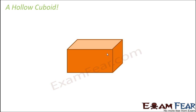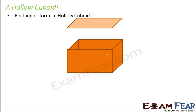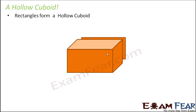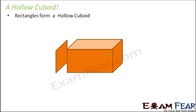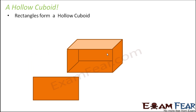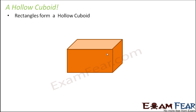You can even make a hollow cuboid using rectangles. How do rectangles form a hollow cuboid? This is how a cuboid looks like — a matchbox. This is one face which is a rectangle, the bottom face is again a rectangle, the back face is again a rectangle, this side face is a rectangle, the other side face is a rectangle, and finally the front face which is a rectangle. So in this case, you have a total of six rectangles arranged in this fashion to form a hollow cuboid.